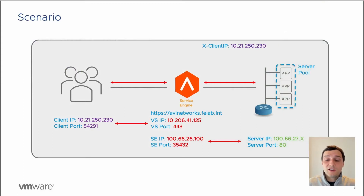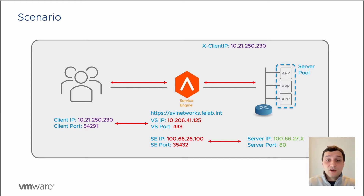So this is our scenario: our client is establishing a connection for the virtual service avinetworks.felab.in, and you can see the IP information below. You also get an idea of our service engine or load balancer IP information and what we're using to connect to those back-end servers. We already have an application profile that's inserting an XFF header called xclientip, and it has that client IP information.